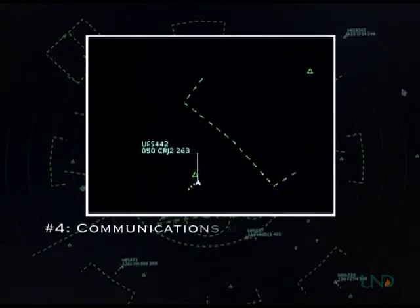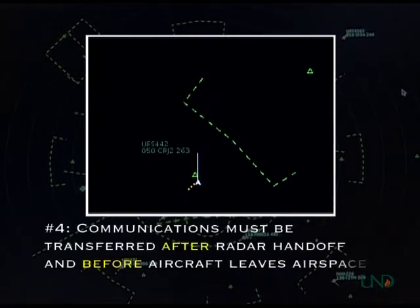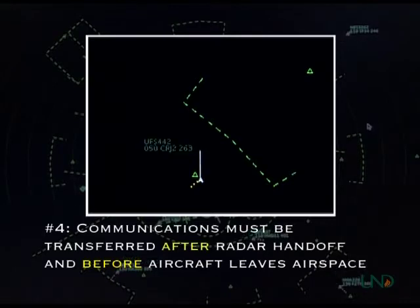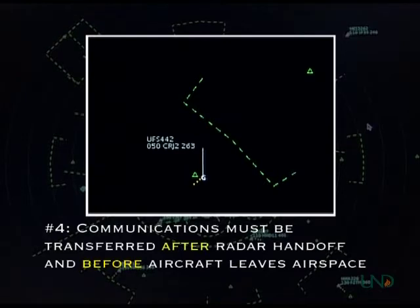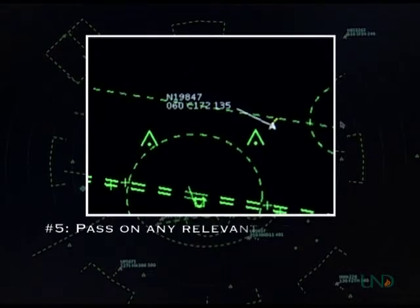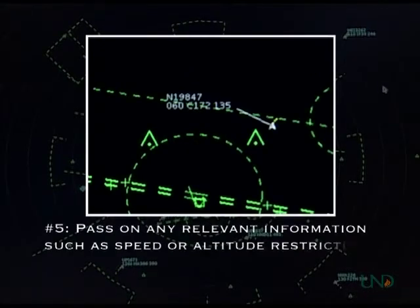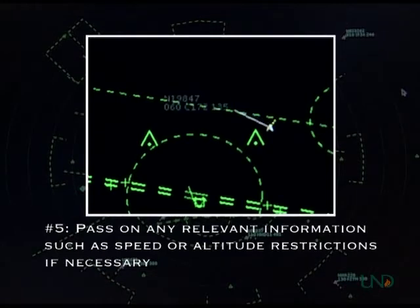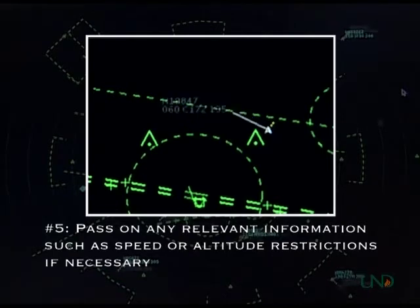Fourth, communications must be transferred after the completion of the radar handoff and prior to the aircraft entering the receiving controller's airspace. The radar handoff is complete when the receiving controller verbally states radar contact, or, if using automation, the target is accepted by the next sector. Finally, any important information about the aircraft, such as speed or altitude restrictions, must be passed along to the receiving controller if such information deviates from normal procedures or is otherwise different from what is normally expected.